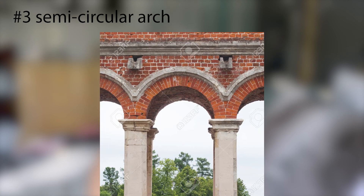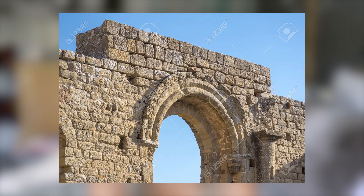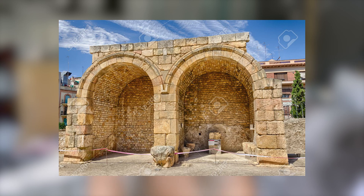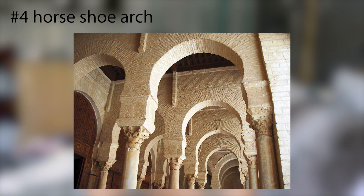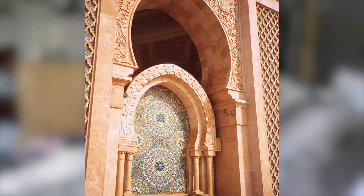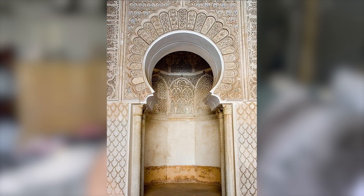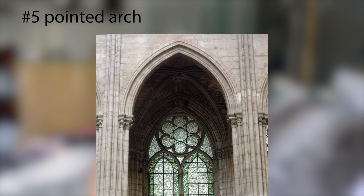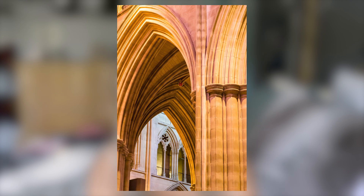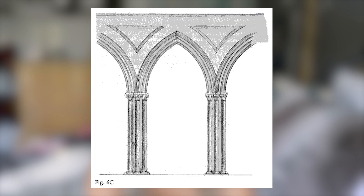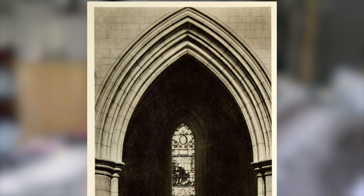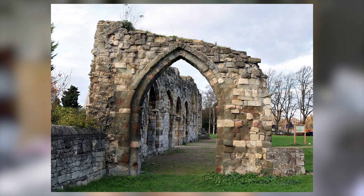Three: semicircular arch — curved to look like a semicircle, with the center lying exactly on the springing line. Four: horseshoe arch — in the shape of a horseshoe, curving more than a semicircle. Five: pointed arch, also known as a gothic arch — two arch circles meet at an apex so a triangle is formed, which can be either an isosceles or equilateral triangle.